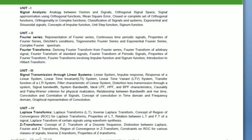In unit two and unit four, we will learn how to convert a signal from its time domain into various other domains — such as the frequency domain, S domain, and Z domain — using different transformation techniques. This will help us analyze the signal in those domains.